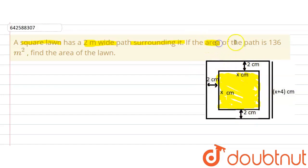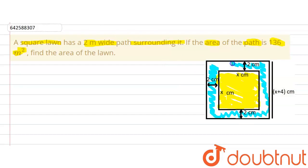We are also given the area of the path, and the area of the path is 136 meter square. The area of this surrounding region is given, and we are supposed to find out the area of the inner region — the area of the lawn.